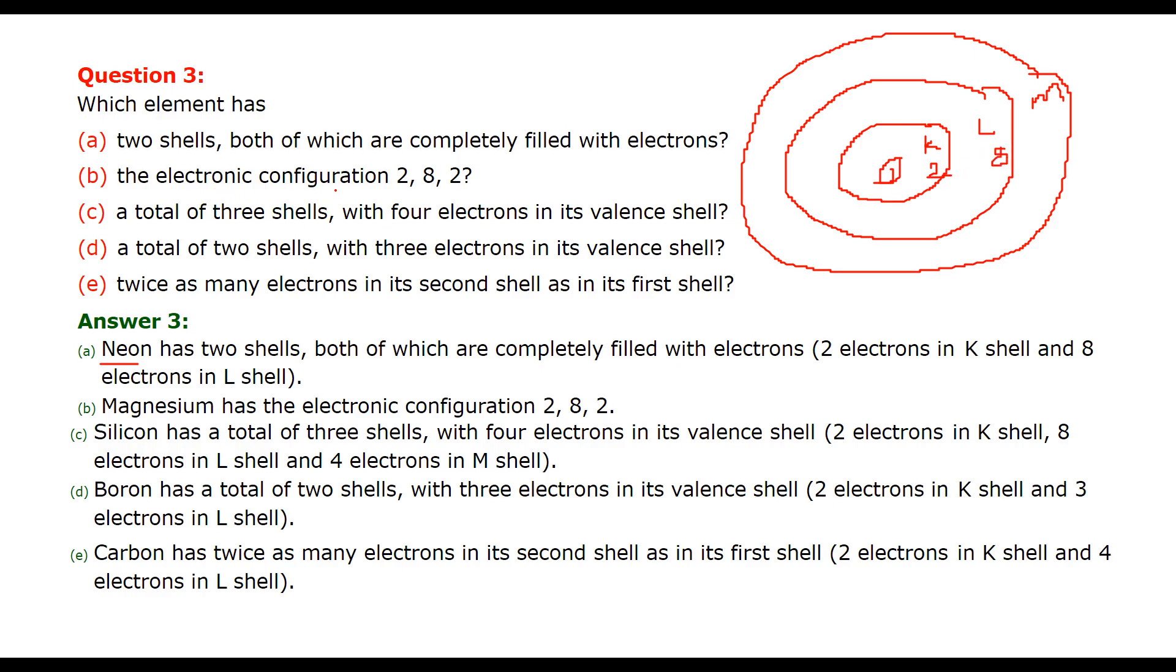Next is the electronic configuration 2,8,2. So 2, 8 and 2. That means it is magnesium. 8 plus 2 is 10, 10 plus 2 is 12. 12 is magnesium.